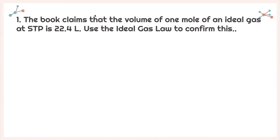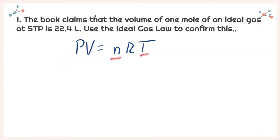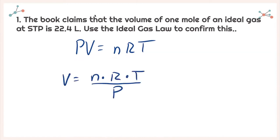So first I'm going to write down my equation: PV = nRT. This shows the relationship between pressure, volume, moles, and temperature, all with our value of R. I need to find volume, so I'll isolate it: V = nRT/P. Because I am at standard temperature and pressure, I know I'll have 273 Kelvin and my pressure will be 1 ATM.